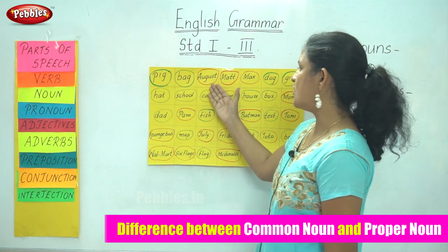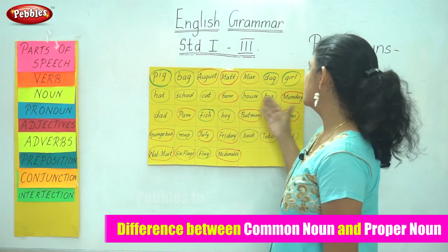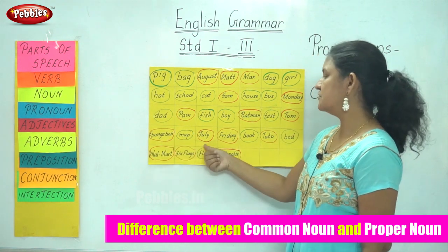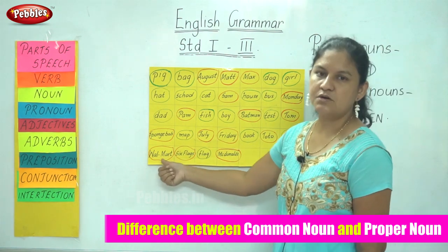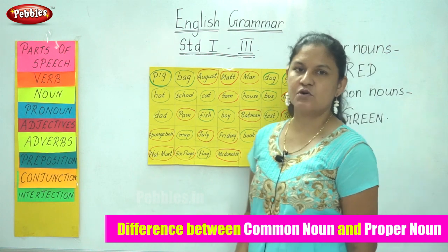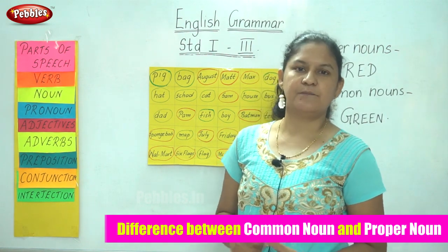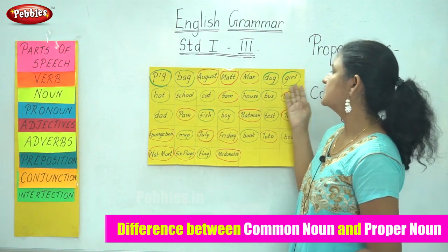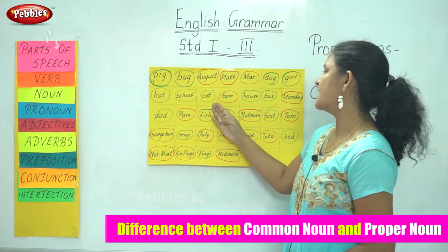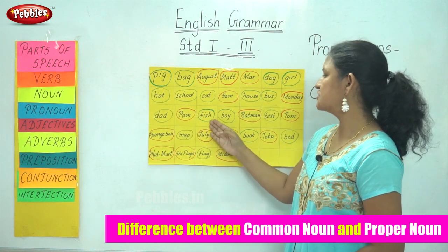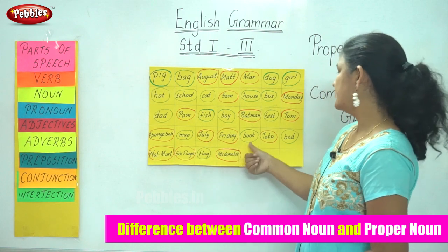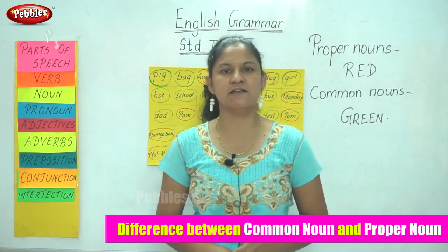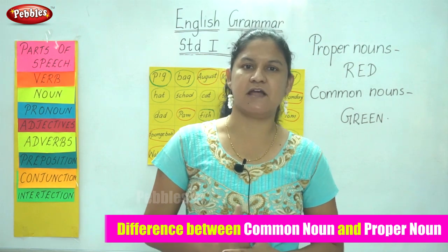Our proper nouns are: August, Matt, Max, Sam, Monday, Pam, Batman, Tom, Spongebob, July, Friday, Toto, Walmart, Six Flags, and McDonald's — these are all names of specific persons, places, and things. Our common nouns are: pig, bag, dog, girl, hat, school, cat, house, bus, dad, fish, boy, test, map, book, bed, and flag — these are all names of persons, places, animals, and things in general. These are the differences between a common noun and a proper noun.